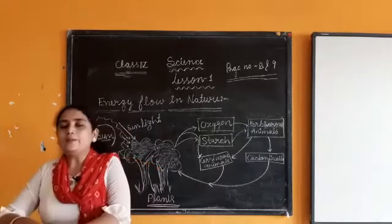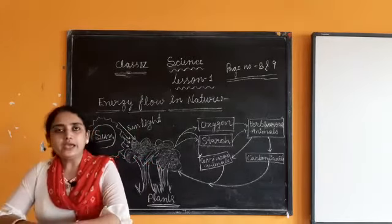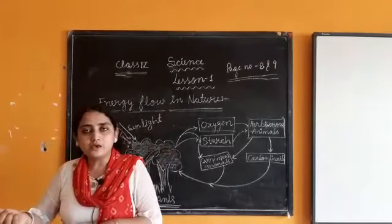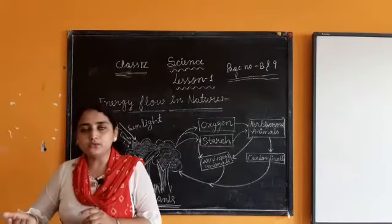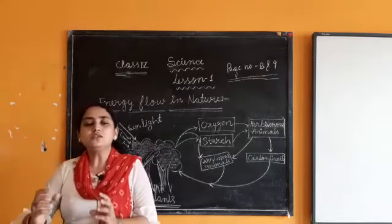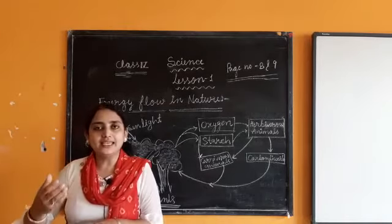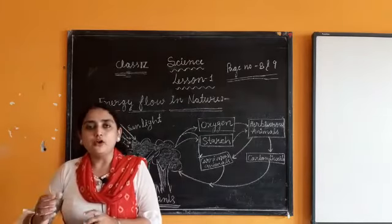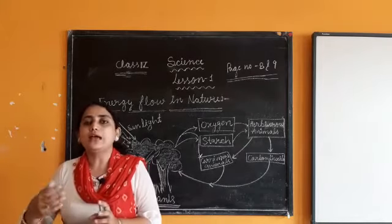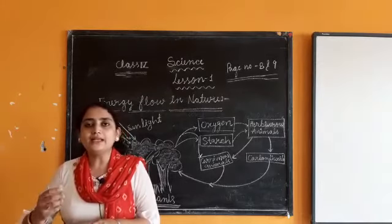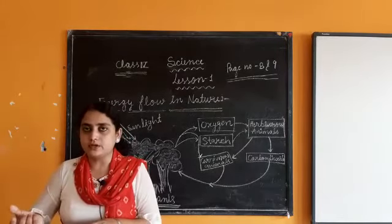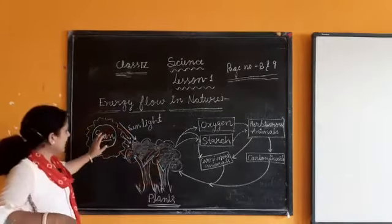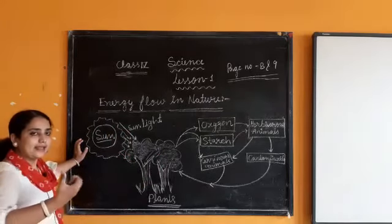This is the last concept in your book — what is energy flow in nature? How does energy flow in nature? All the green plants on earth are our food producers. Food producer means the organism that produces food for others. Green plants produce food for themselves through photosynthesis, but they also produce food for other organisms. They produce food with the help of sunlight and chlorophyll. The energy comes from sunlight.